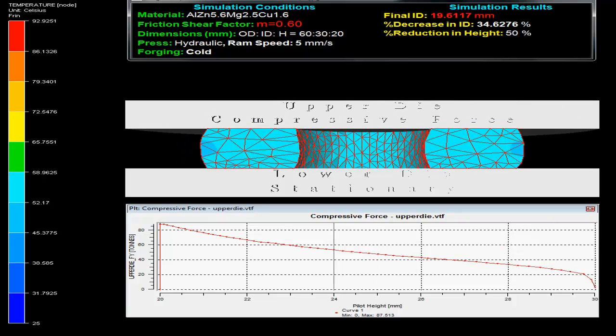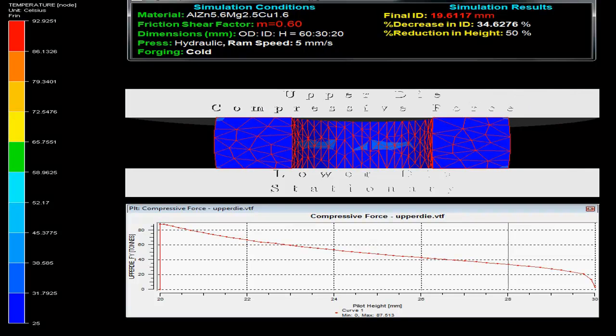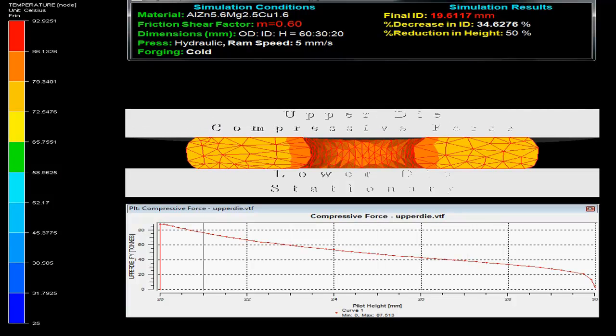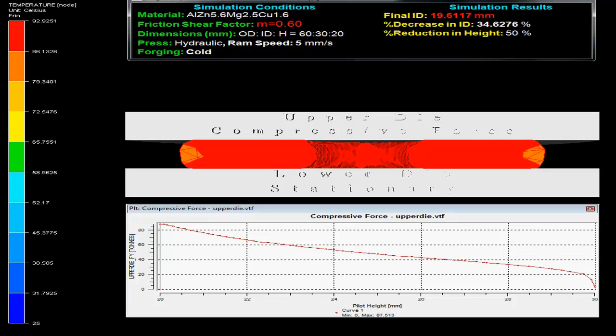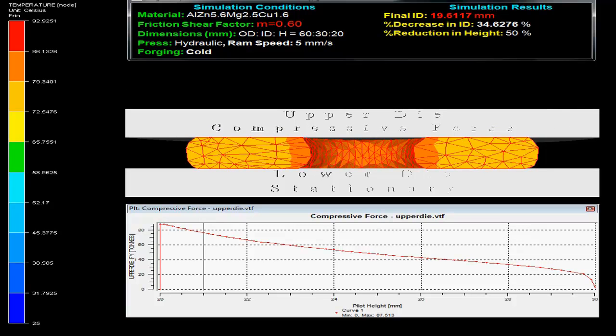The simulation conditions are displayed in the top left corner. The specimen material is aluminum alloy with friction shear factor M = 0.6, and the initial outer diameter to inner diameter to height ratio is 60:30:20.